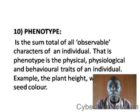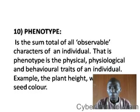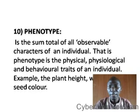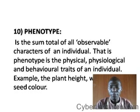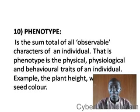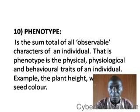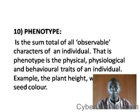Phenotype is the total of all observable characters in an individual — those characters that can be seen. The phenotype includes the physical, physiological, and behavioral traits of an individual. For example, plant height, weight, and seed color can be seen and observed — that is why we call them the phenotype.